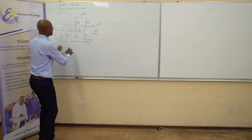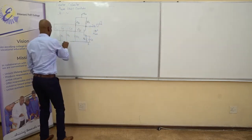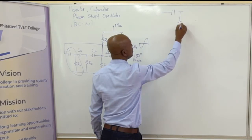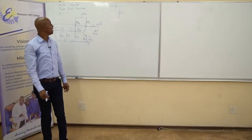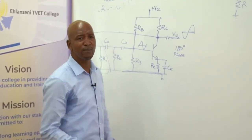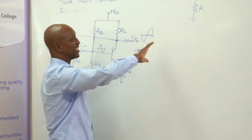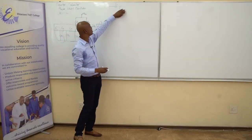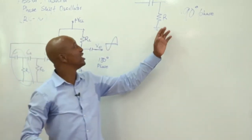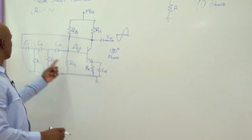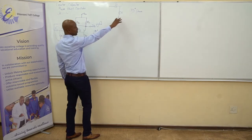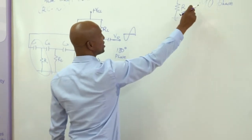How does this RC network provide us with a phase shift? Let us dissect one RC stage. One RC stage represents what we call a high-pass filter. If we apply an alternating signal, we shall have some kind of phase shift. If there were no resistor, the capacitor alone would give us a 90-degree phase shift lead. It would be practically impossible to use a capacitor alone, so we need a value of resistance that will shift this angle from 90 degrees to a certain value that we need.